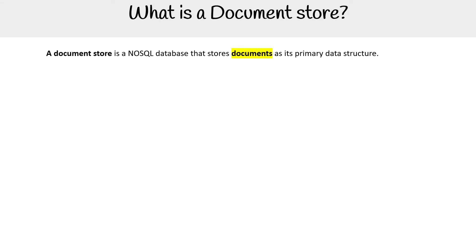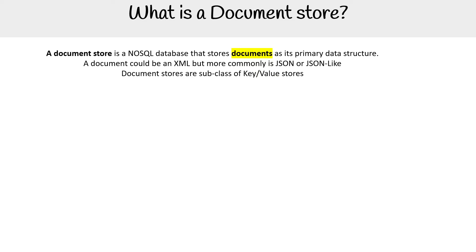Let's talk about document stores. A document store is a NoSQL database that stores documents as its primary data structure. A document could be XML, but it's most commonly JSON or JSON-like structure. Document stores are subclasses of key-value stores.